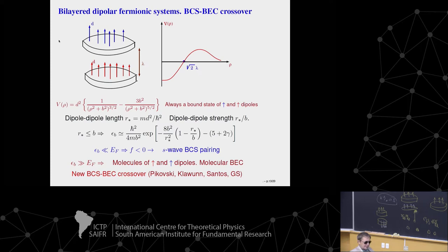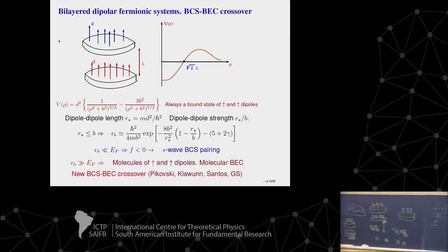These bilayer geometries are not only useful for showing that in some cases you may get a collisionally stable system and obtain superfluid pairing for identical fermions — they may be useful for explaining certain phenomena in complex condensed matter systems.